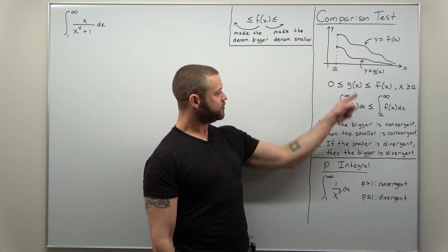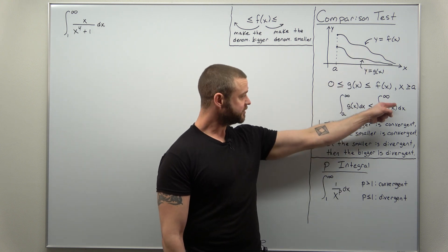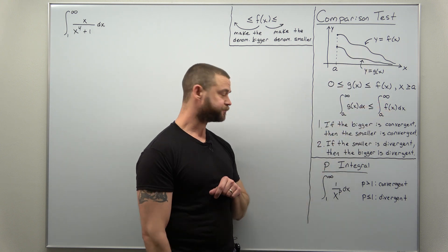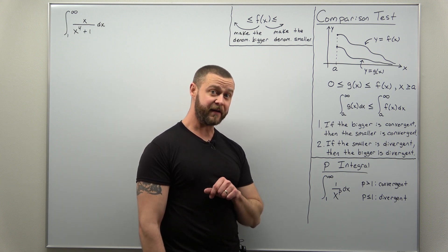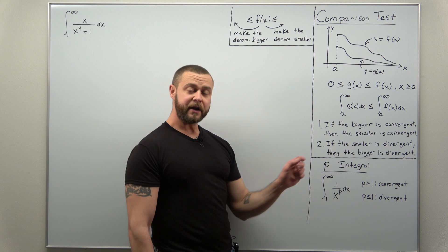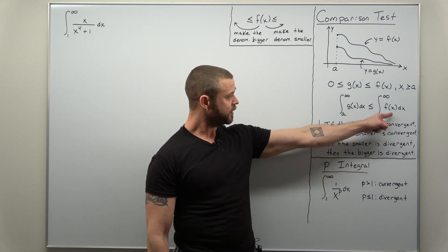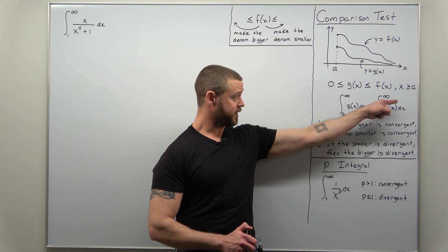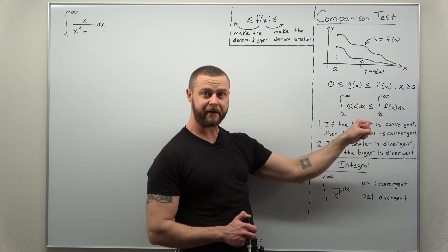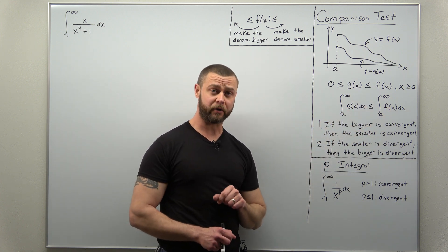The area beneath g of x, well that should be less than the area beneath f since f is the bigger function. Now there's only two conclusions here that give you definitive answers. I like to write it with the words bigger and smaller since I find that's a little bit more intuitive for my students. So we're going to think of f of x as the bigger integral here, or the integral involving f of x, and the integral involving g of x, that's the smaller integral.